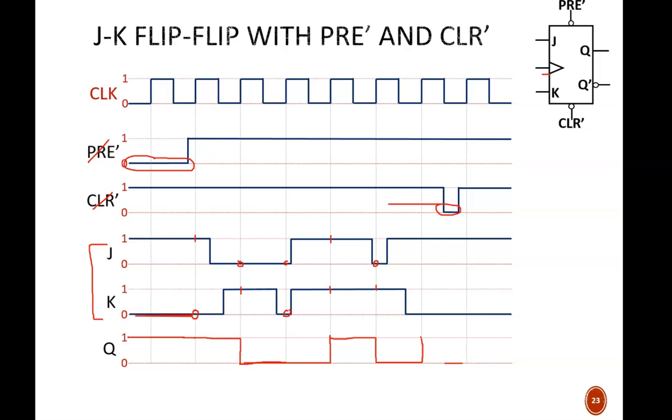This is where it gets interesting again because of the upcoming asynchronous clear. Q will remain at its current one until that clear is activated, at which point Q immediately drops down to zero. This is the only change in this whole waveform that does not occur on one of these vertical lines.